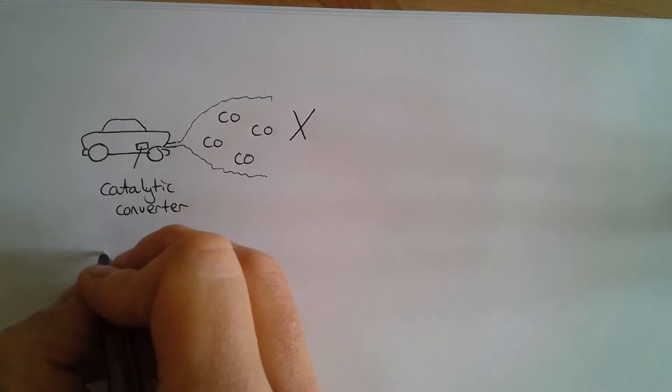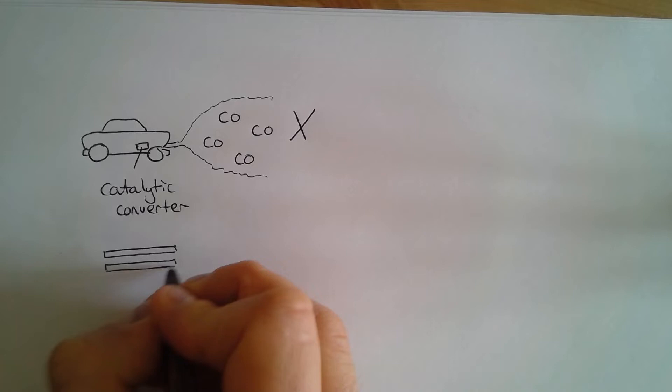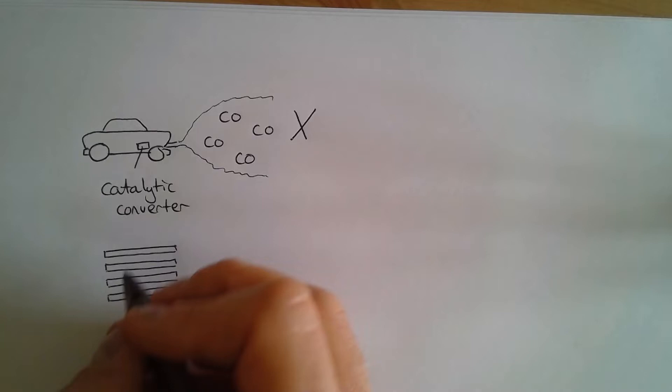A catalytic converter is a mesh of some metals like platinum, rhodium, and palladium. We're just going to think about one of those at the moment, and that is the element platinum.